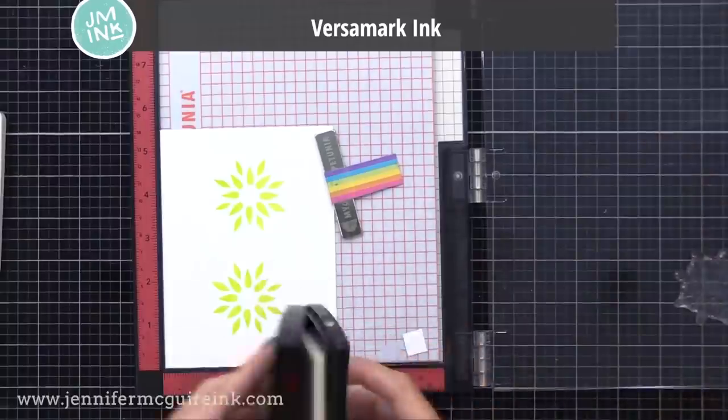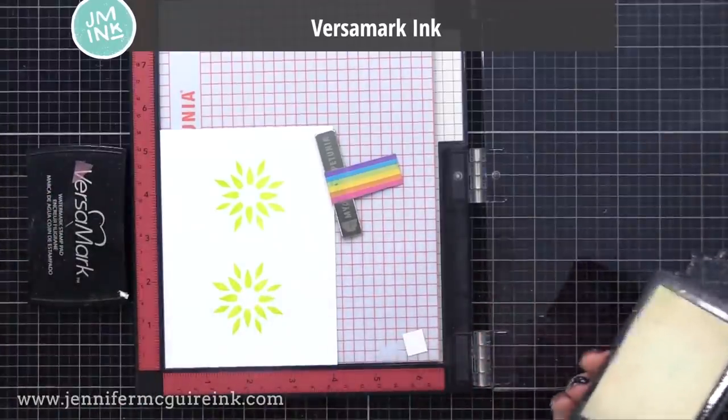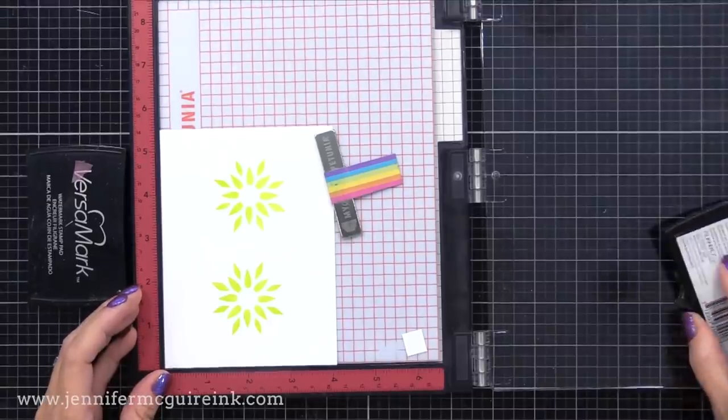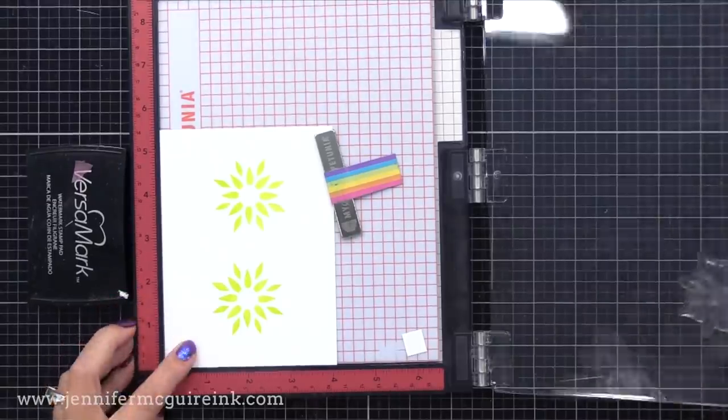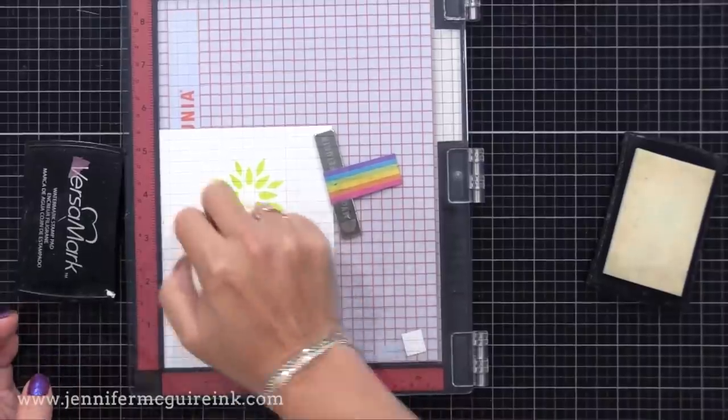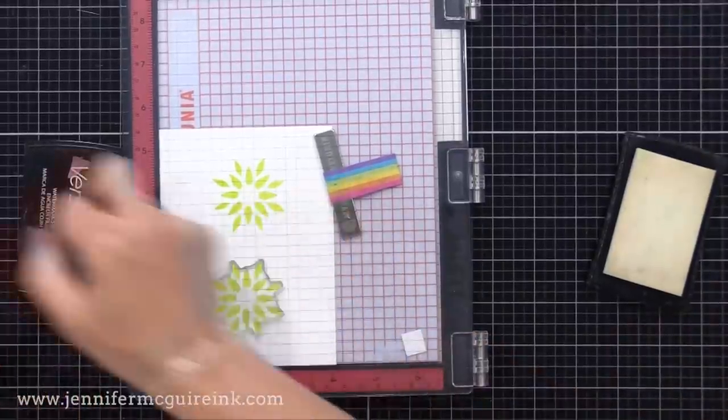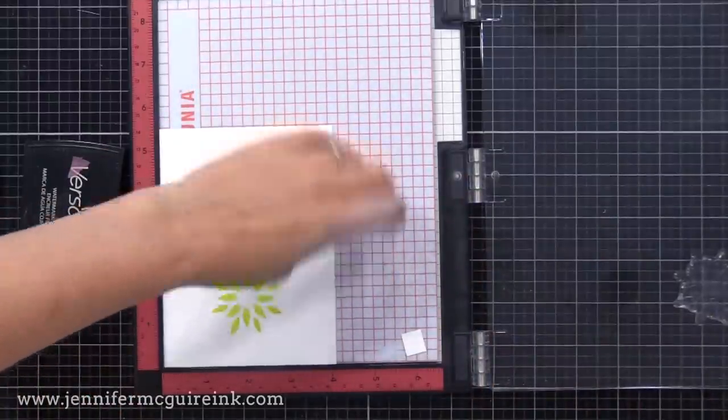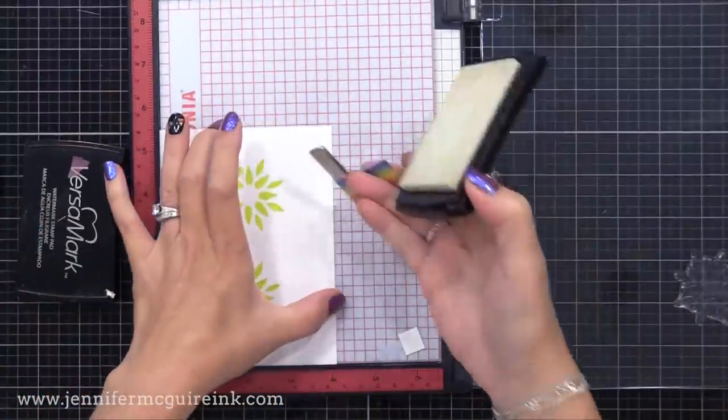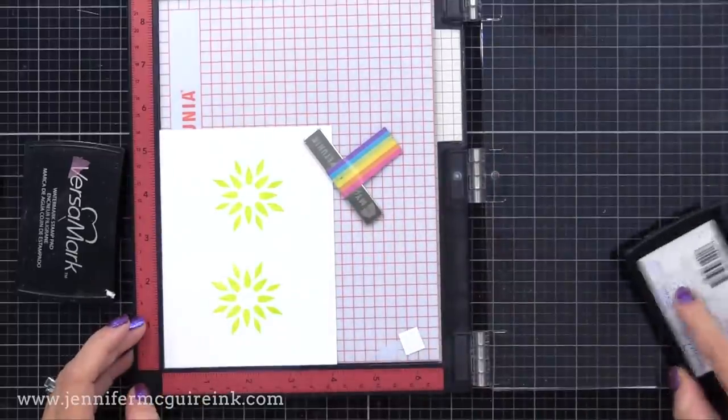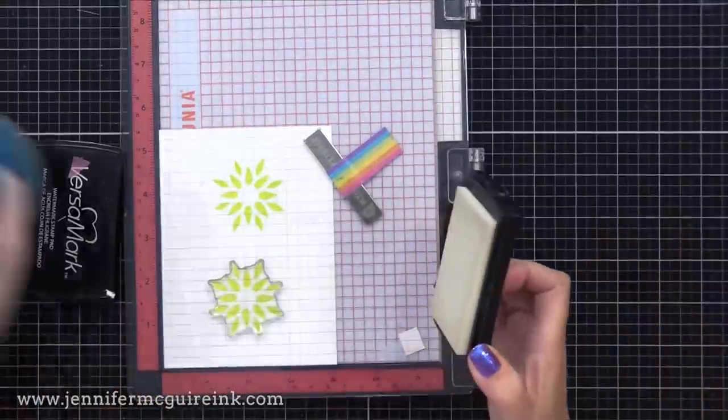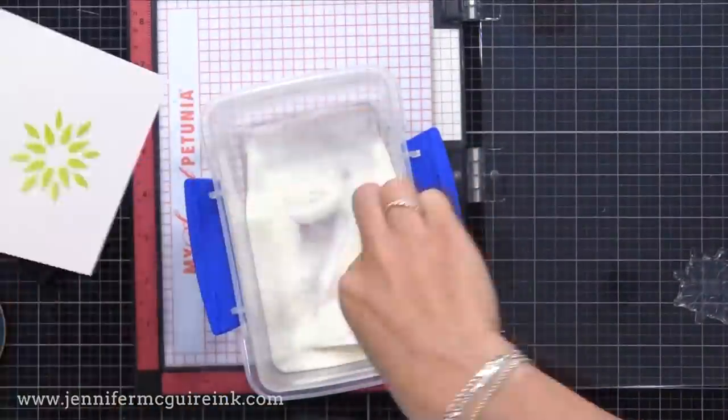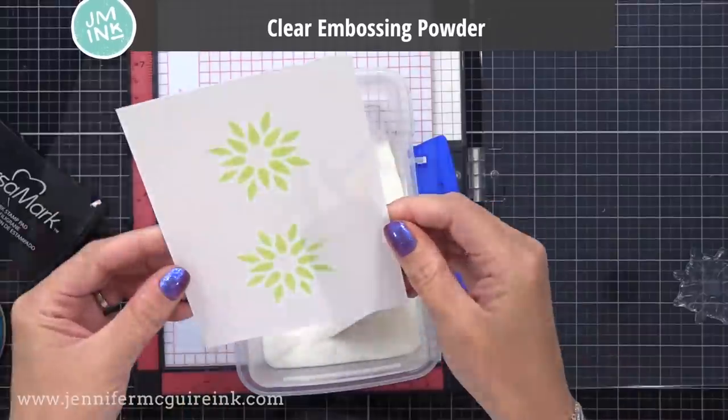Now I'm gonna clean my stamp really well, and then stamp the same image on top of the green that we've already done, but using Versamark ink. This is a clear, sticky ink. So it'll make our green floral images a little bit sticky. That way we can add embossing powder in a moment. Now the reason I am clear embossing these images, is so that when I come back with another of the floral layers and stamp on top, we don't get that blended look. Instead, the clear embossing will resist it, and this green will stay bright green.